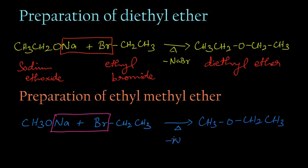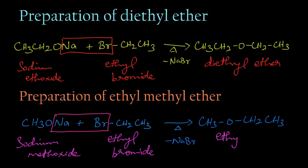This product is ethyl methyl ether. Let's write the name for this compound. Sodium methoxide reacts with ethyl bromide, NaBr is released, and we get ethyl methyl ether, that is methoxyethane.